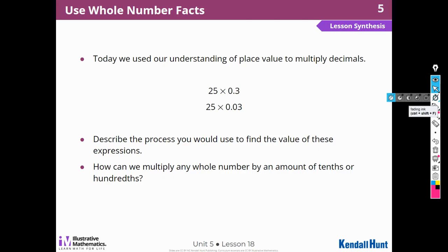Today we used our understanding of place value to multiply decimals. Describe the process you would use to find the values of these expressions. So, I like that first method, right? So, I would do 25 times three, which I know is like three-quarters, because a quarter is 25 cents. But I can multiply it out if I didn't know that. Three times two is six, plus one is seven. And then it's in the tenths place, so I need to multiply that times one-tenth, which would give me 7.5. So seven and five-tenths for this one.